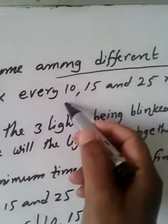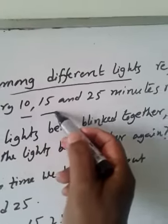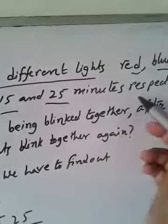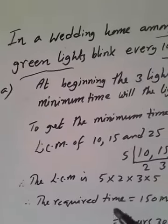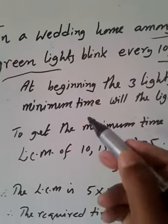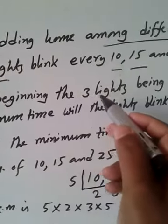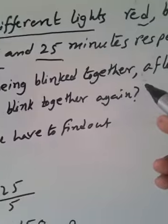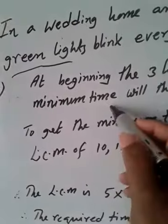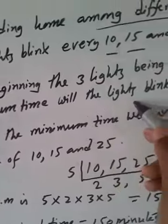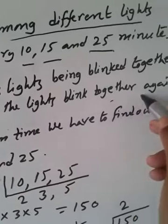blink every 10, 15 and 25 minutes respectively. The question is, at beginning the 3 lights blink and blink together, after what minimum time will the lights blink together again?